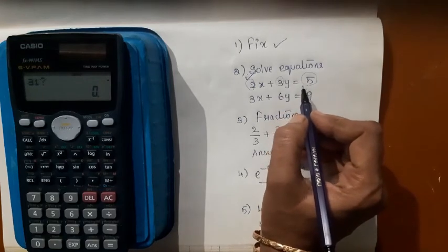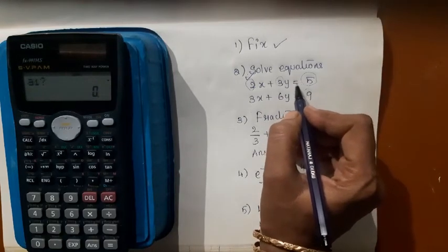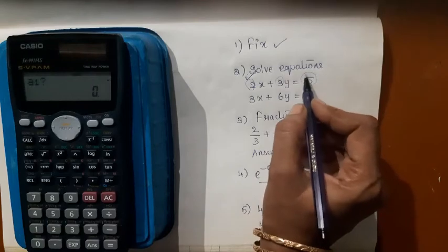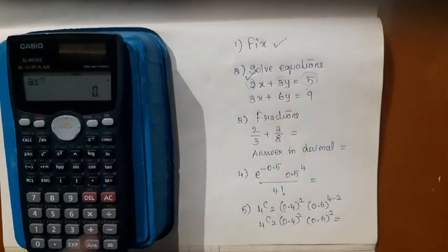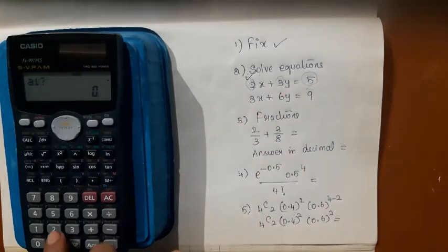Now it is asking for the coefficients. a1 is this, b1 is this, c1 is this. And also remember, you should have c1 on the right side of the equation, not in the left side. So this is the pattern in which you should give the values.